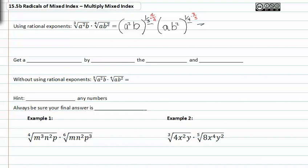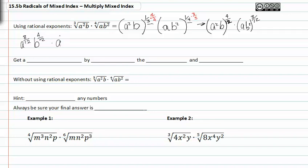Once we've done that, we get a squared times b raised to the four-twelfths, times ab squared raised to the three-twelfths. From here we can distribute those exponents through, and we get a to the eight-twelfths, b to the four-twelfths, times a to the three-twelfths, b to the six-twelfths. Notice at this point that all our denominators match — we have just created indexes that are the same.